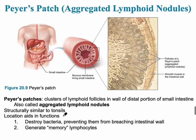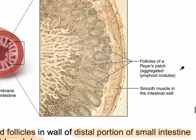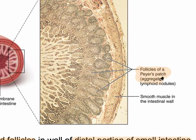Peyer's patches are another location of MALT. They are aggregated lymphoid nodules — clusters of lymphoid follicles — found throughout the small intestine, specifically at the distal end, the ileum. Looking at the histology, we can see specific follicles of the Peyer's patches in the lining closer to the mucosa, which is why they're called mucosa-associated lymphoid tissue.